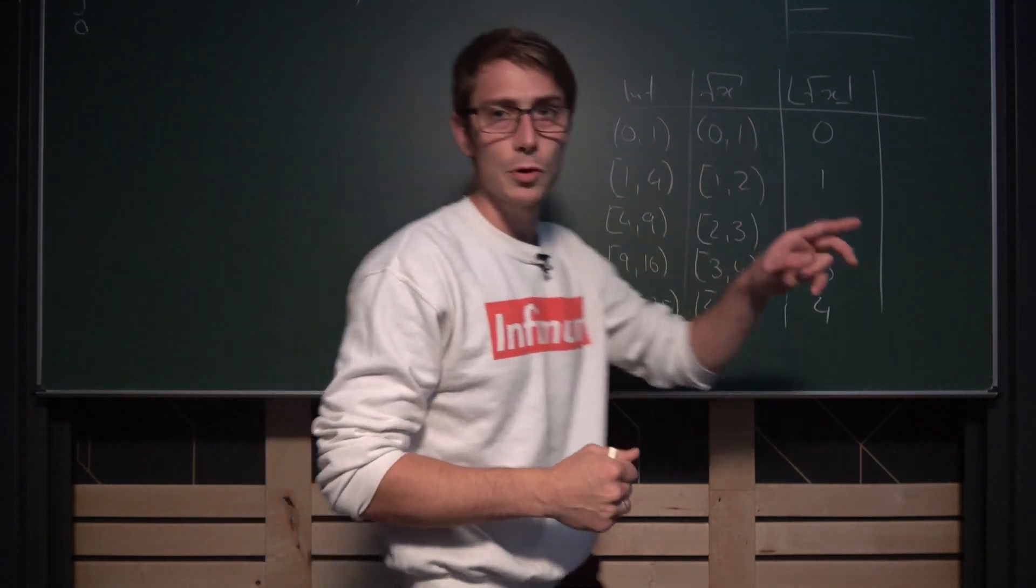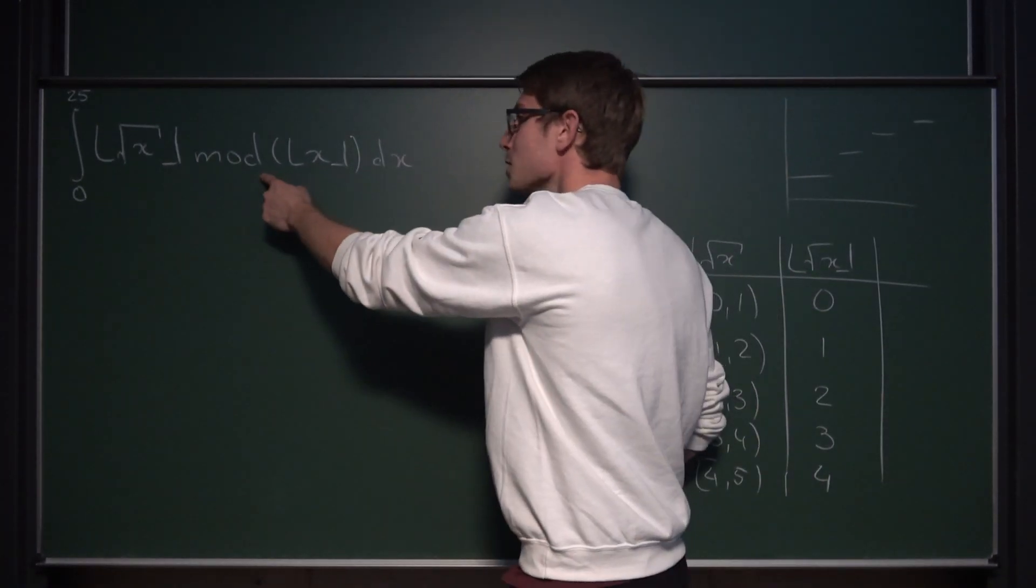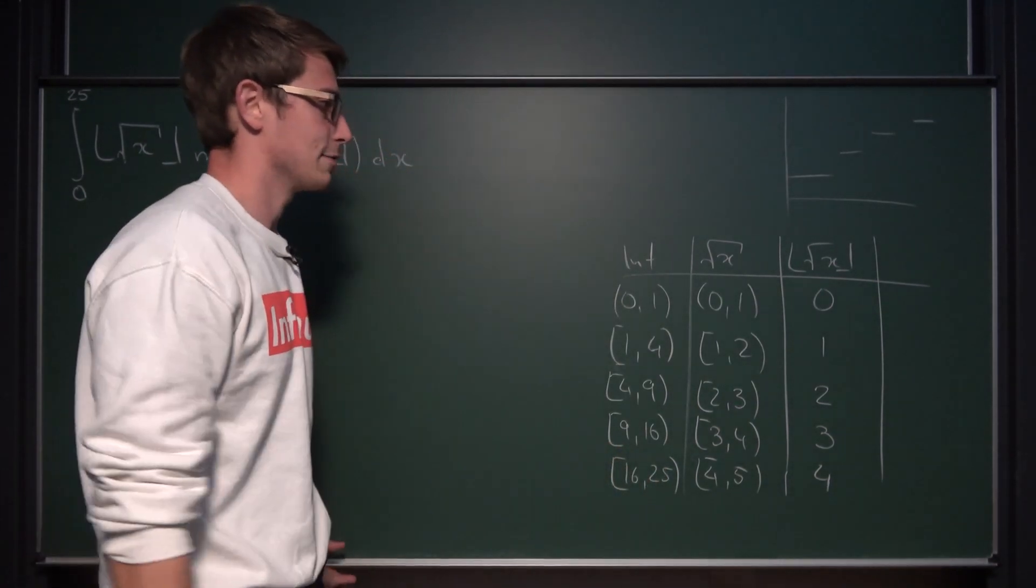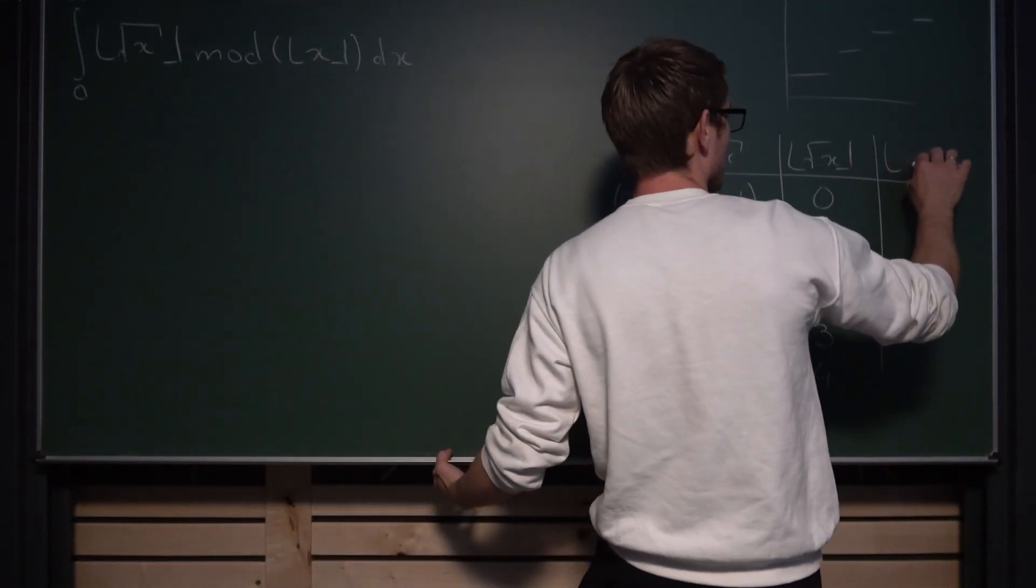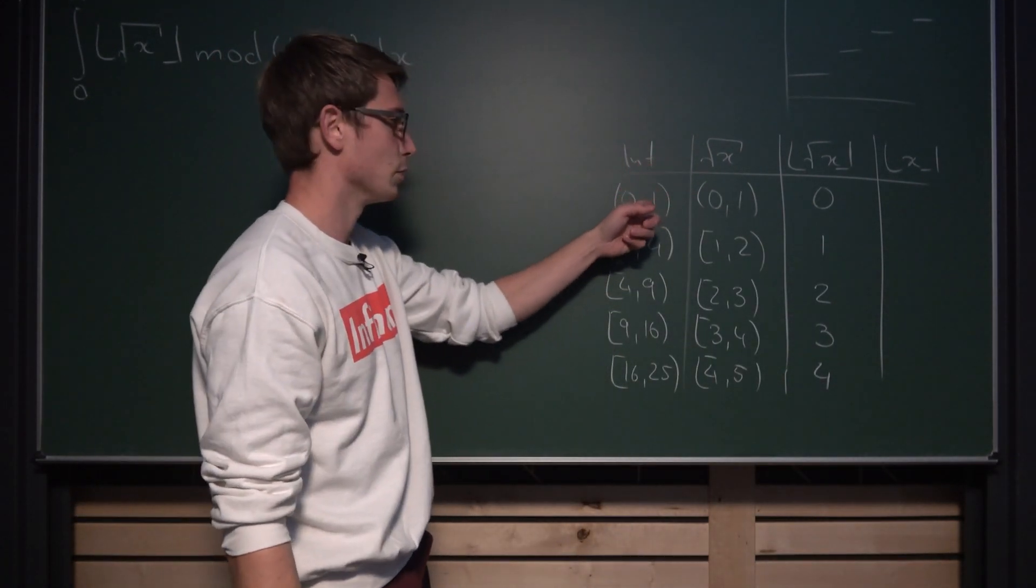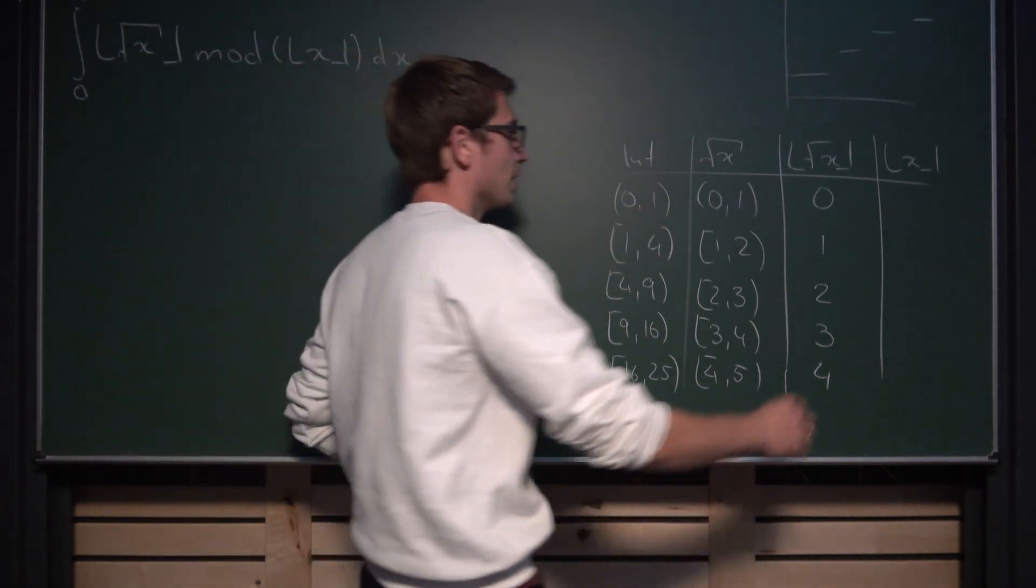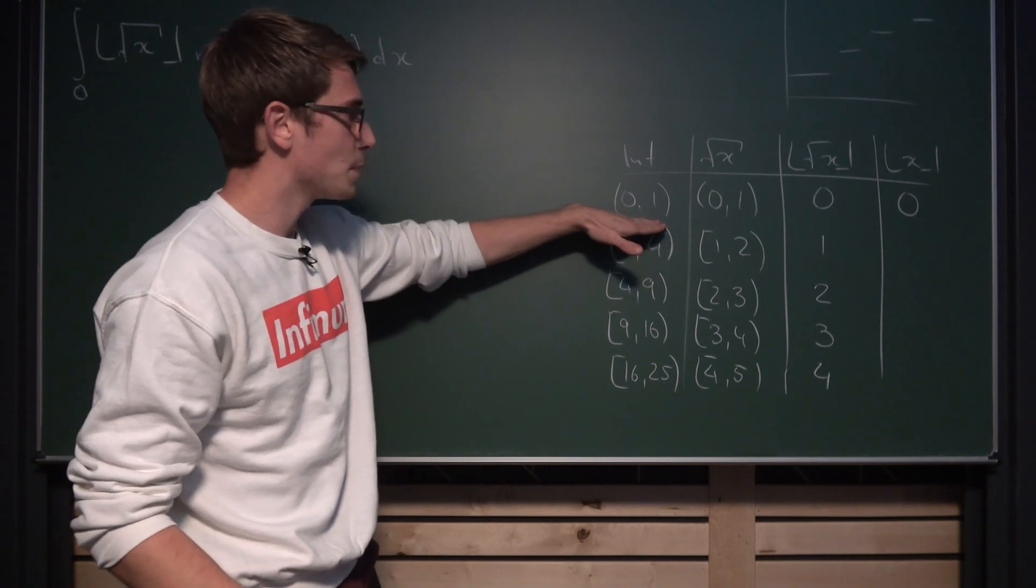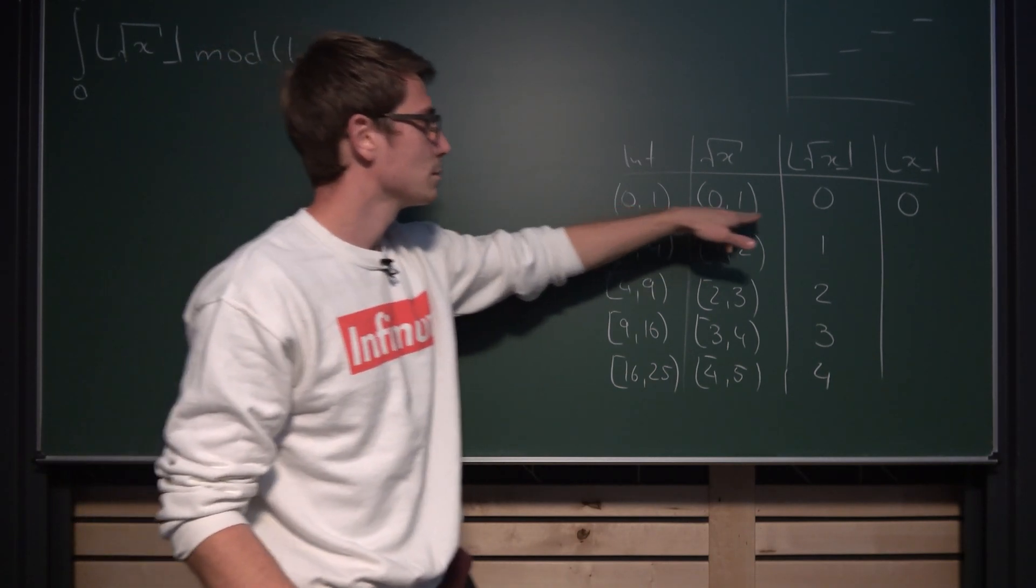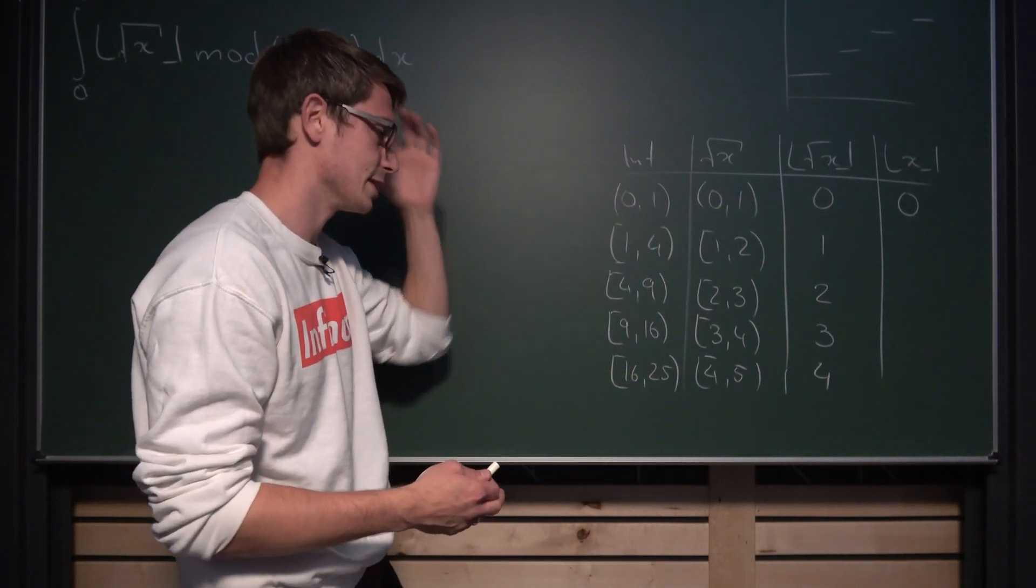Now we got rid of the square root of x part in the floor function. Now what about the mod of the floor of x? Well, let us just take a look at the floor of x in itself. The floor of x is really easy to handle because we are going to take a look at this interval right here. From 0 to 1 we are not going to reach 1. The floor of x is going to result in 0. Meaning on this first part from 0 to 1 we are actually going to get the integral of 0 dx, which is just going to be 0 because it's a definite integral.